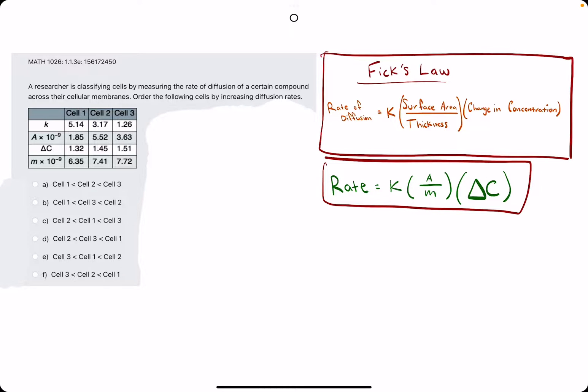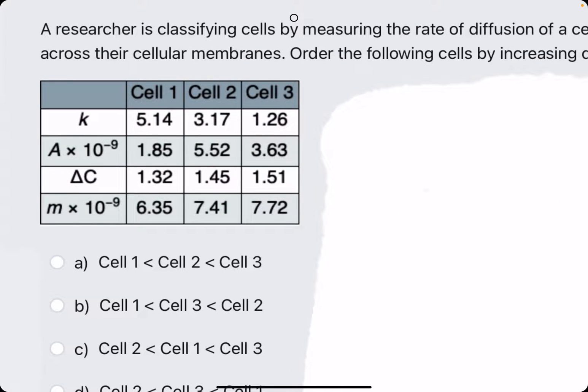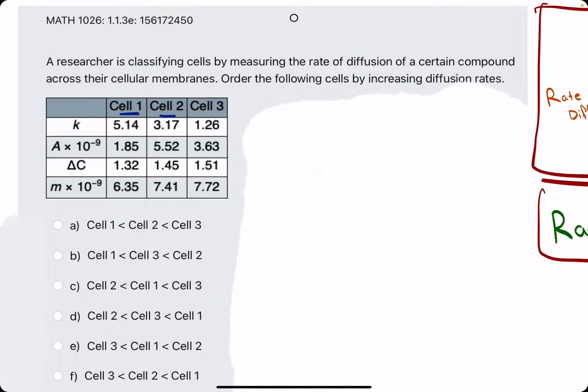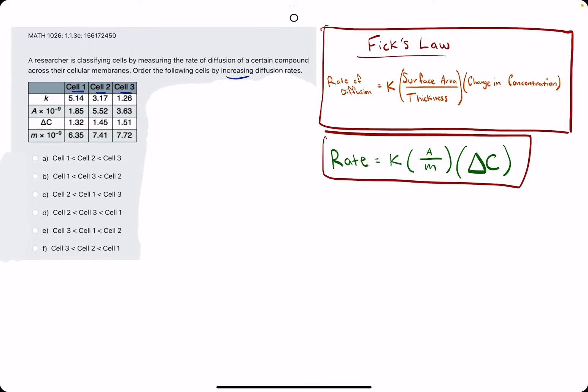In this problem we are using Fick's Law along with the values in this chart to identify what the diffusion rates are for cells 1, 2, and 3, and we will order them in increasing order from smallest to largest.